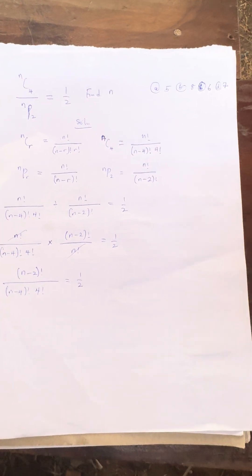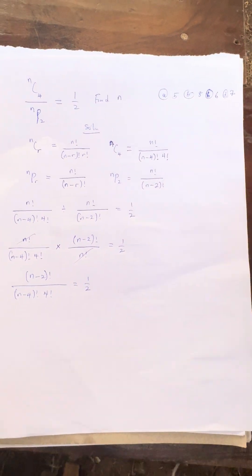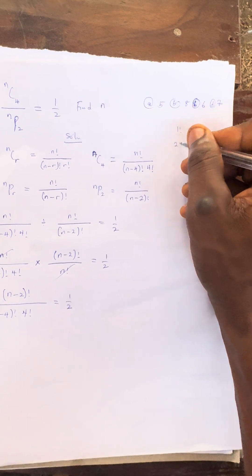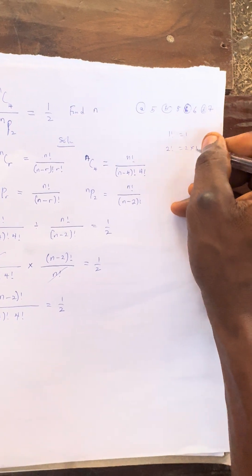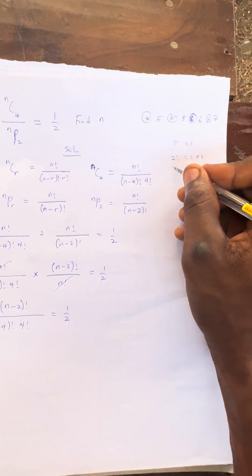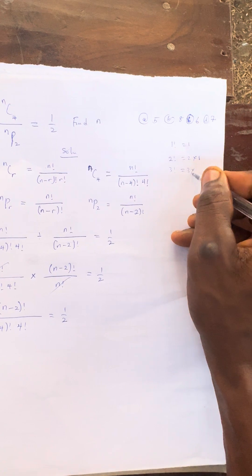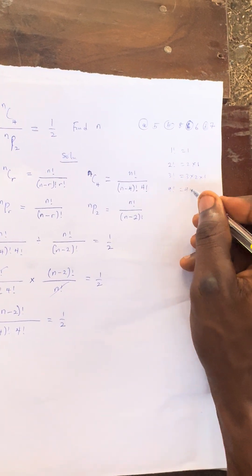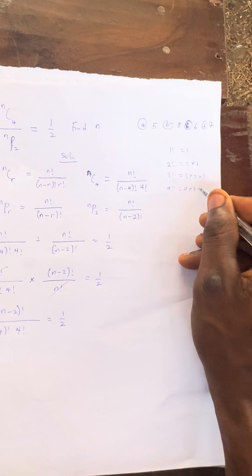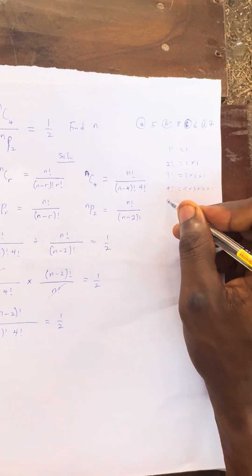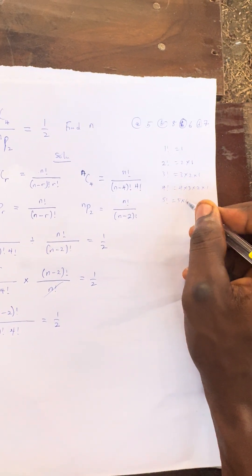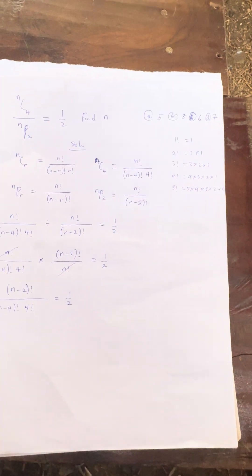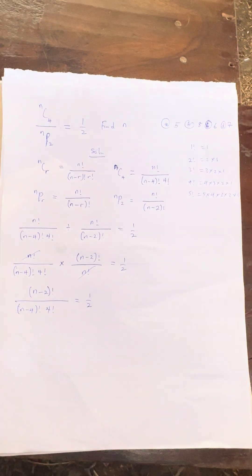The n factorial cancels with n factorial, leaving (n minus 2) factorial over (n minus 4) factorial times 4 factorial, equals 1 over 2. Now, you have to learn what factorial means: 1 factorial is 1; 2 factorial is 2 times 1; 3 factorial is 3 times 2 times 1; 4 factorial is 4 times 3 times 2 times 1; 5 factorial is 5 times 4 times 3 times 2 times 1.